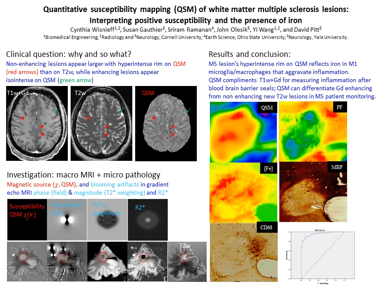This hyper-intense rim on QSM corresponds to iron measured using elemental analysis — laser ablation ICP mass spectroscopy. Immunohistological staining using CD68 reveals that the iron is associated with M1-activated microglia macrophages.